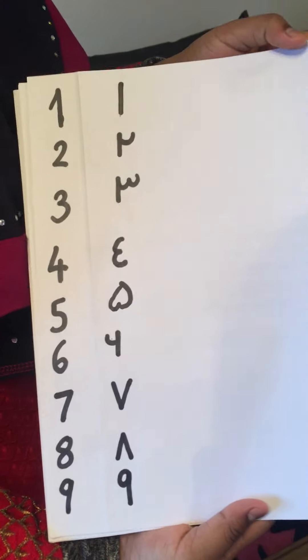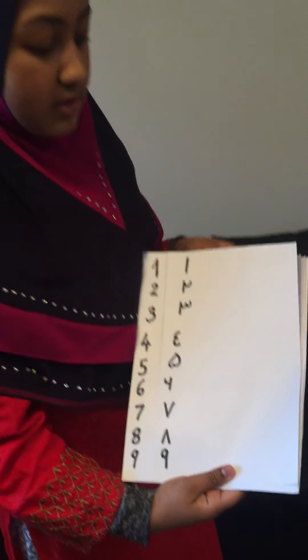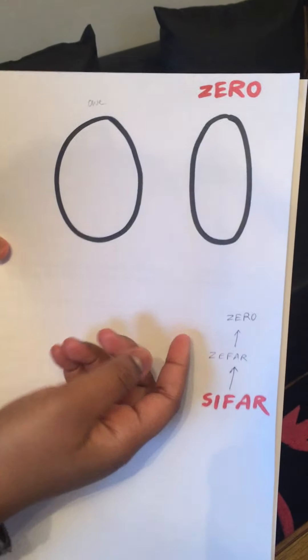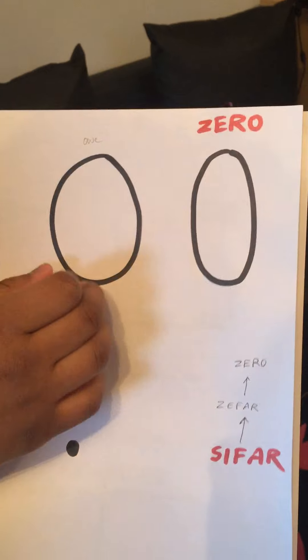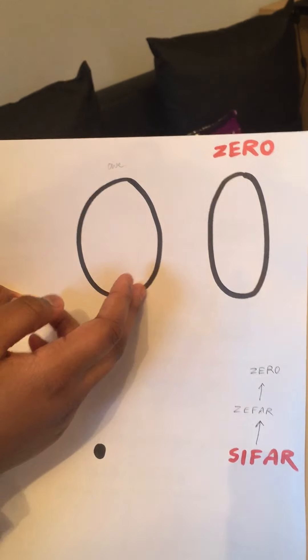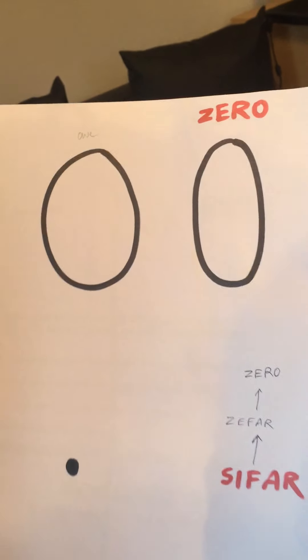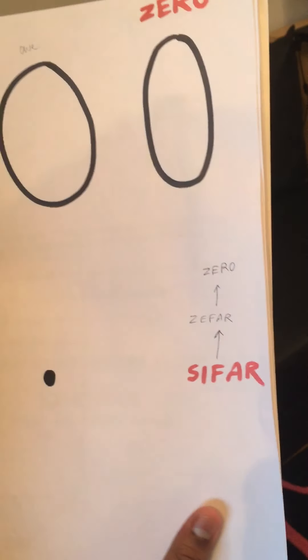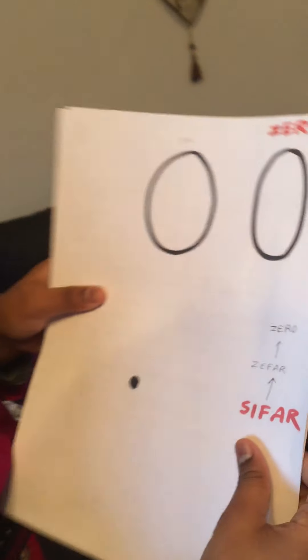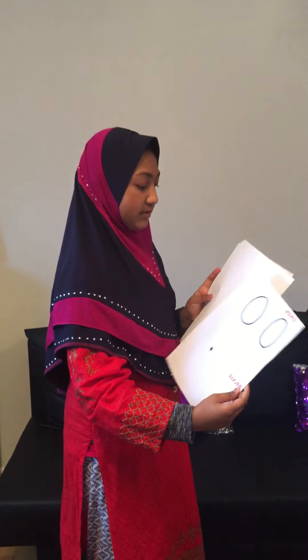Now we'll move on to number zero. Zero in English looks like this — it's more oval in shape. Some people mistake it for the letter O, but you can tell because it's more sphere or round in shape. In Arabic, zero looks like a small dot. In Arabic it's called Sifr, and then it became Zifr, and then zero.